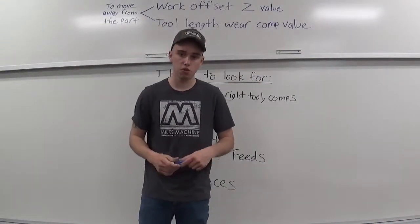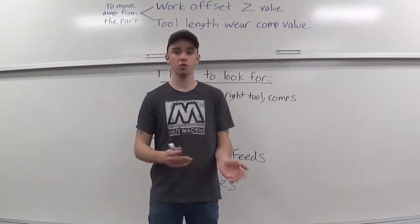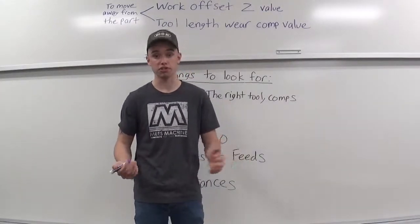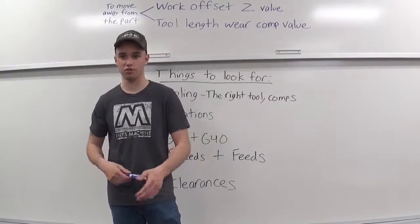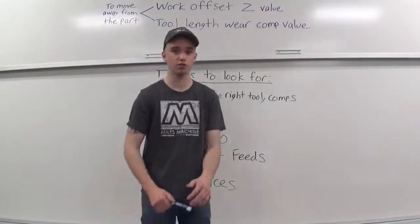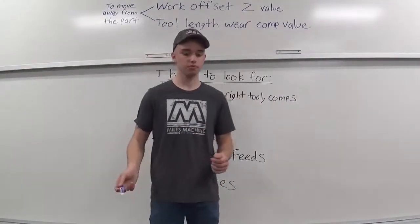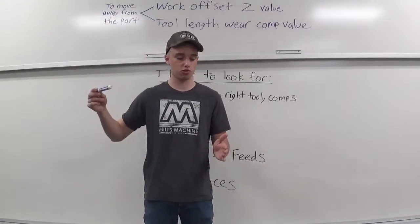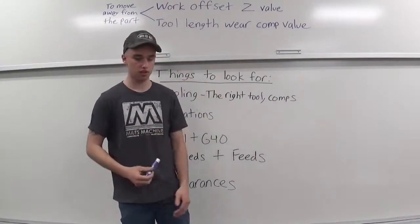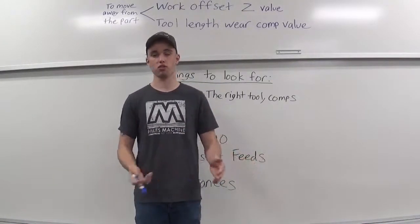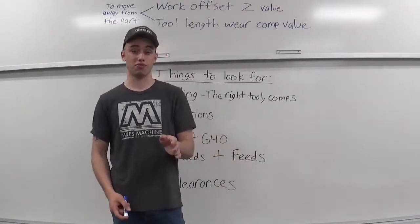Another couple tips. When dry running, I normally do the rapid, my rapid override down. It's anywhere from, like, 5% to 25%. You don't want the machine, especially if you don't know what the program is going to be doing, it's your first time having the program out in the machine or whatever. You don't want those tools just whipping all around when you're doing the G00 moves. So, doing that just allows you to watch the tool come in at a nice steady pace and come down close to your part. And, you're making sure that the tool is going and doing what it's supposed to be doing.